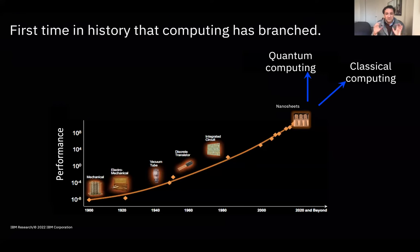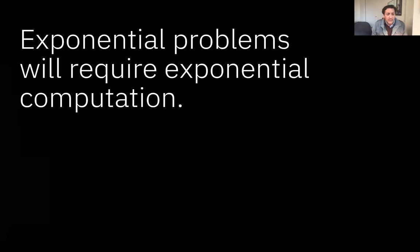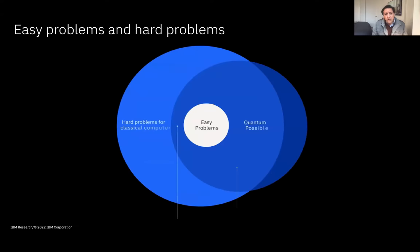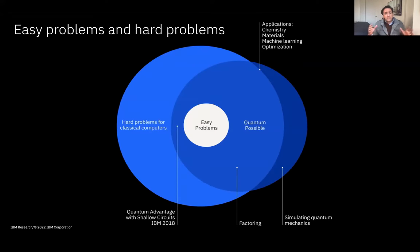Quantum computing is not just another step in Moore's law — it is something fundamentally different. We care about this because we face problems with an exponential number of variables. It would be incredibly powerful to tackle exponential problems with exponential computation. From an information theory perspective, there's a class of easy problems where the number of variables is not exponential — things like video games, rendering images — these are non-exponential problems.